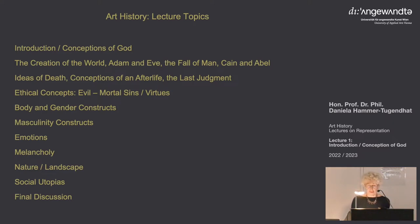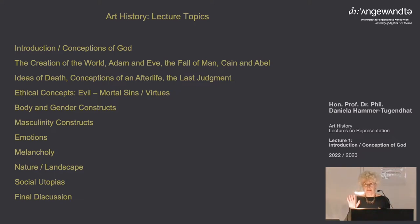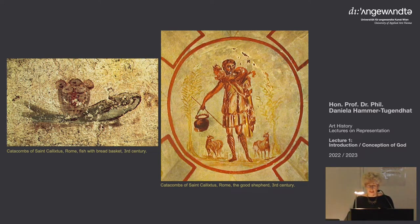Christianity takes up Judaism's prohibition of images, having grown out of Judaism and also being against the pagan practice of worshipping idols, but also because it is an underground organization. For the first two to three centuries, you have no images. Imagine three centuries of Christianity without images. Beginning with the end of the third century, images start to appear, especially in frescoes in the catacombs or on sarcophagi.